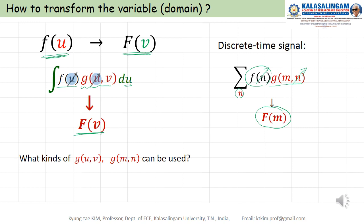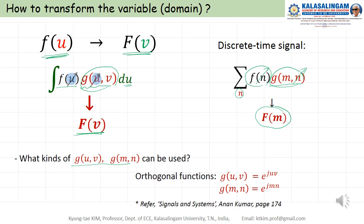By the way, here G, U, V and G, M, N is here. What kind of functions can be used? For this, we need to use some kind of orthogonal functions. But there are many kinds of orthogonal functions. For transform, this kind of complex exponential function is used very popularly. Also, G to V, M, N, U is continuous case, M, N is discrete case.